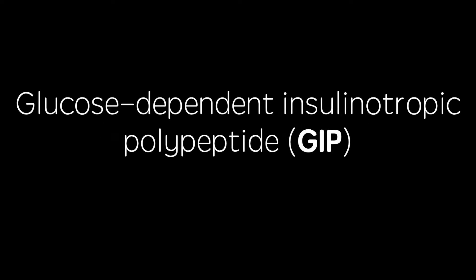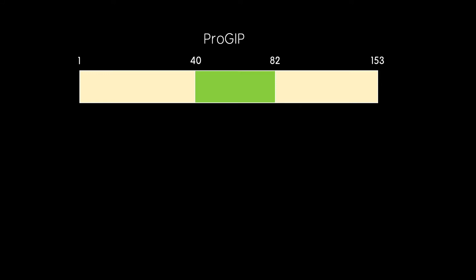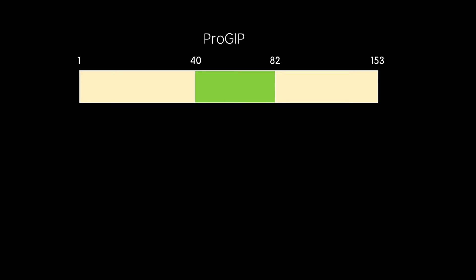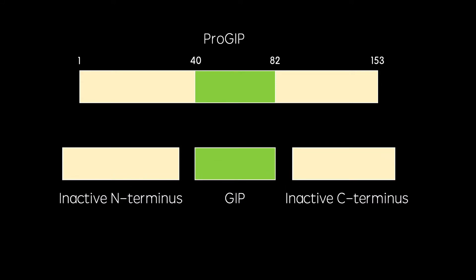GIP, or glucose-dependent insulinotropic polypeptide, is synthesised from pro-GIP in the K-cells of the duodenum and proximal jejunum, and released in response to carbohydrate and fat absorption. The effects of GIP are similar to, but not as strong as, those produced by GLP-1.